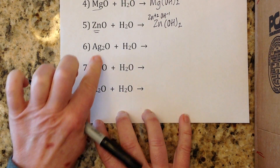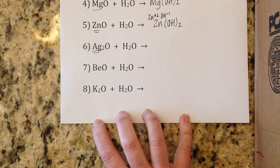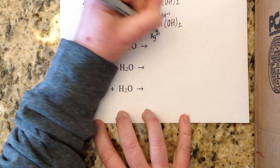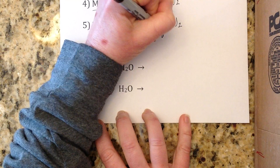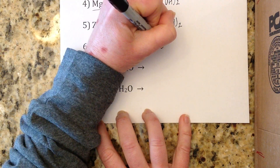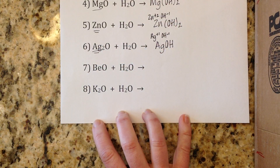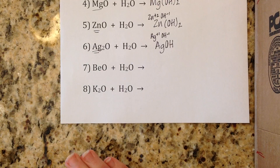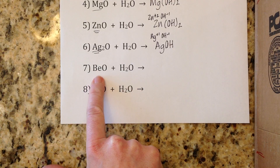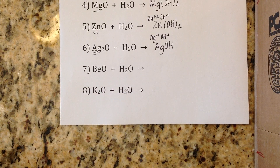Number six: a metal oxide with water where the metal is silver. Silver has a plus one charge. Crisscross silver with hydroxide minus one — the ones cancel — and you get silver hydroxide, AgOH. These are really easy: for metal oxide-water reactions, just take the metal that was attached to the oxygen and crisscross that metal with hydroxide every time.